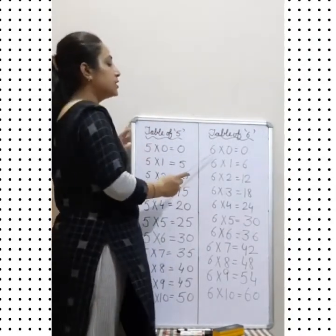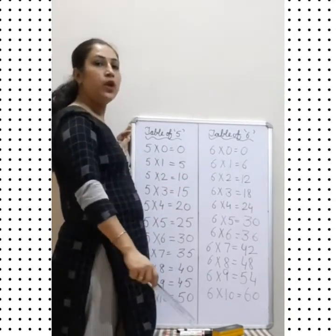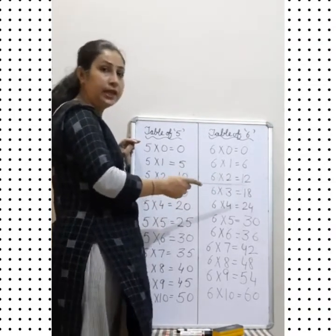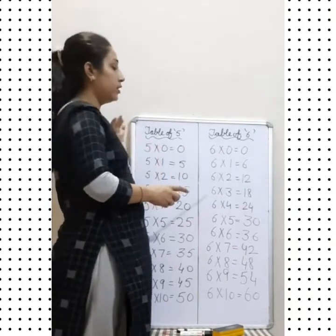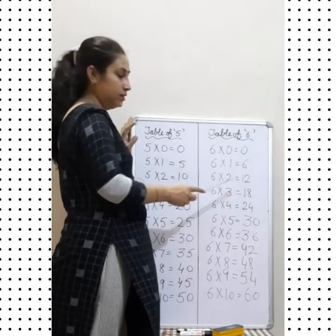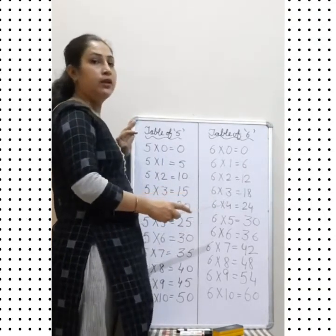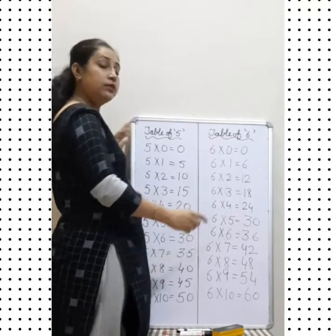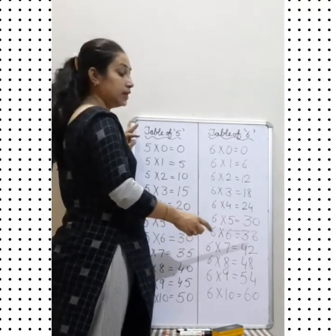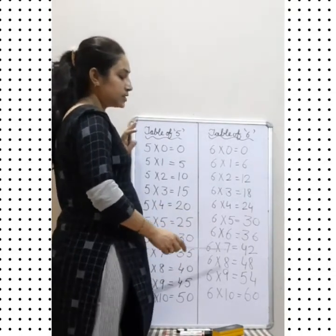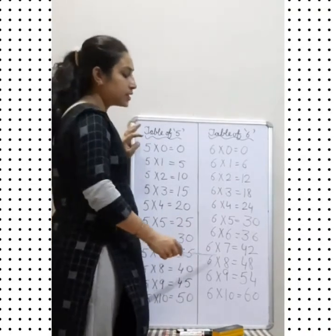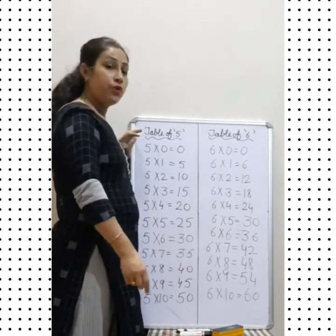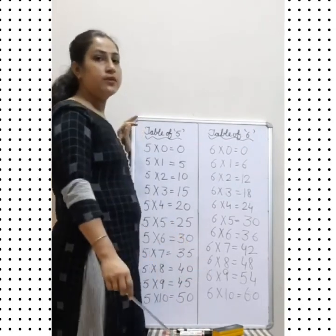Table of 6. Six zeros are zero, six ones are six, six twos are twelve. Speak with me, everyone: six twos are twelve, six threes are eighteen, six fours are twenty-four, six fives are thirty, six sixes are thirty-six, six sevens are forty-two, six eights are forty-eight, six nines are fifty-four, and six tens are sixty.